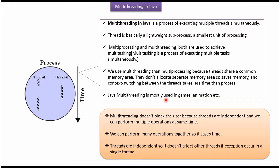Java multi-threading is mostly used in games, animation, etc. Multi-threading does not block the user because threads are independent and we can perform multiple operations at the same time. We can perform many operations together so it saves time. Threads are independent so it does not affect other threads if an exception occurs in a single thread.